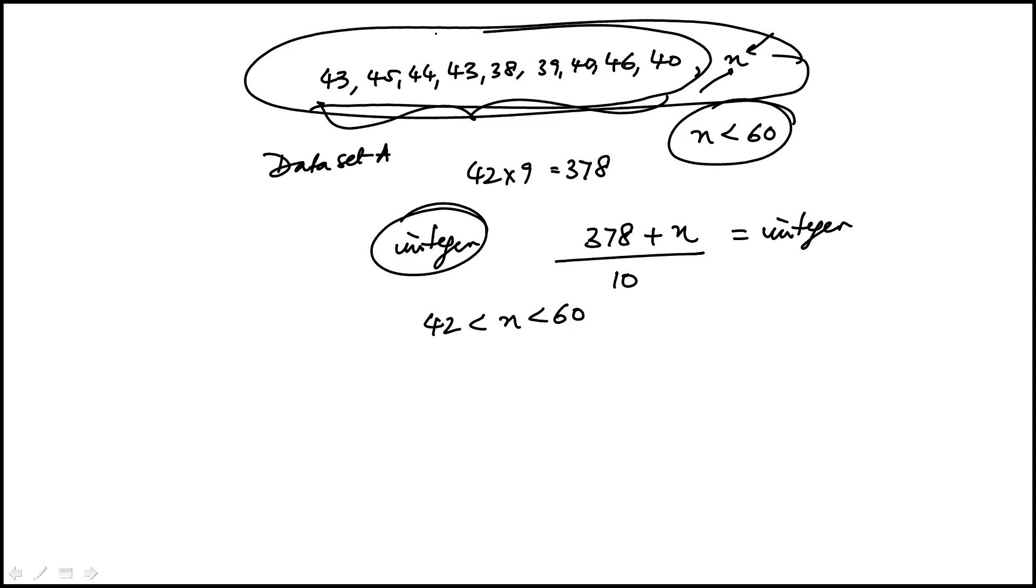If the mean of the existing set is 42, then the new number has to exceed 42 for that mean to go above 42. That's the condition.